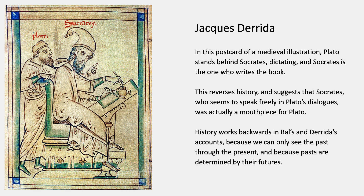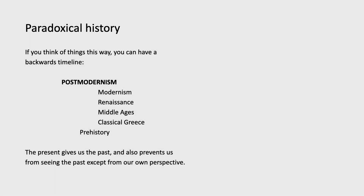So history works backwards in Mika Ball's and Jacques Derrida's accounts because we can only see the past through the present, and because pasts are determined by their own futures. It's paradoxical, but it's also intuitive. If you like to think of things this way, then you can have a backwards timeline. Your mega-period would be maybe post-modernism, and under that you'd have whatever you wanted — but they would go backward in time: Modernism, Renaissance, Middle Ages, classical Greece, prehistory. In this way of thinking, the present gives us the past, and it also prevents us from seeing the past except from our own perspective.